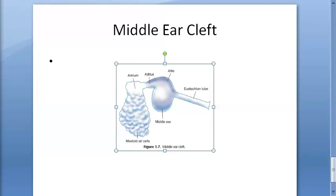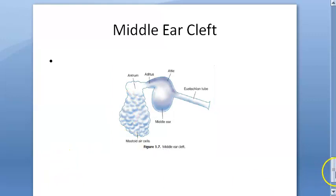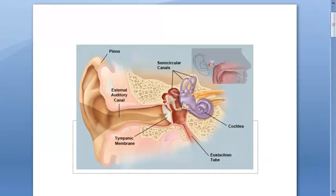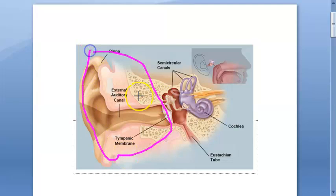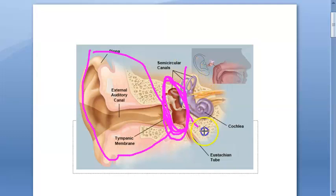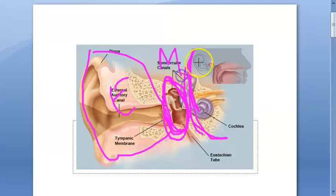In this video, let us look at what the middle ear cleft is. Basically, from the pinna till the tympanic membrane is the external ear. From the tympanic membrane till the labyrinth — what you're seeing in the center — is the middle ear. From there onwards becomes the internal ear. So you know what the middle ear is — we're focusing on that now.